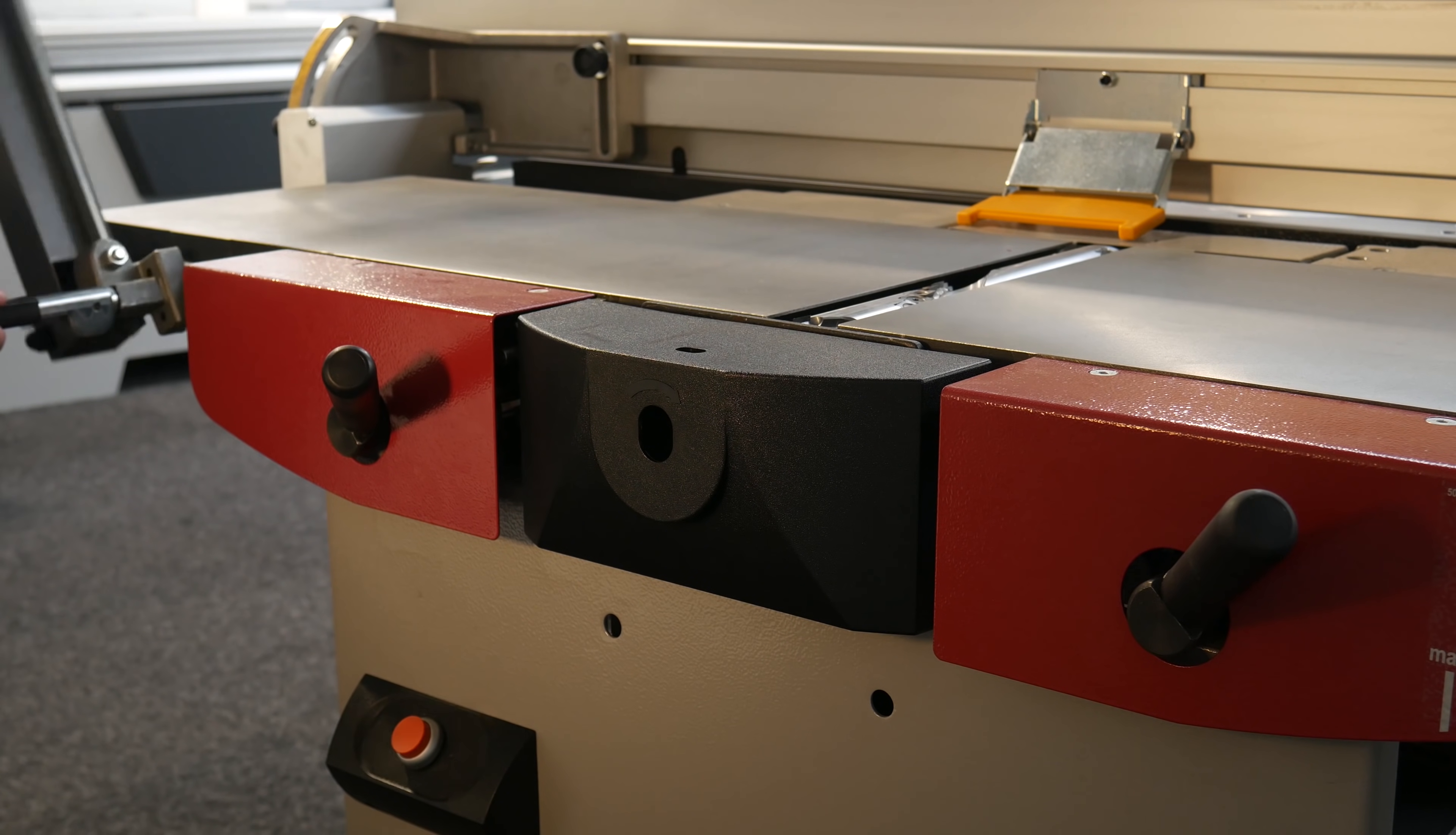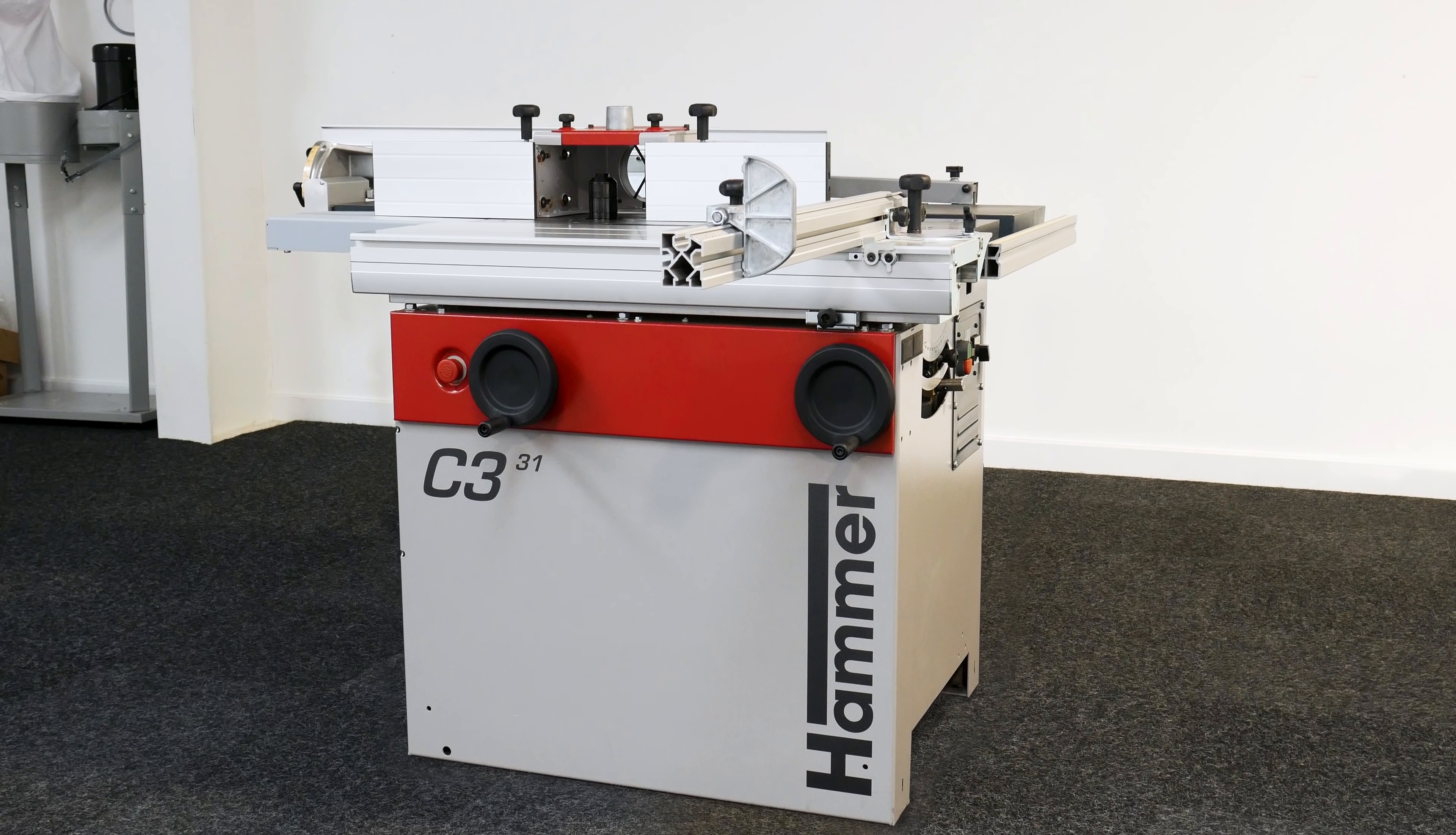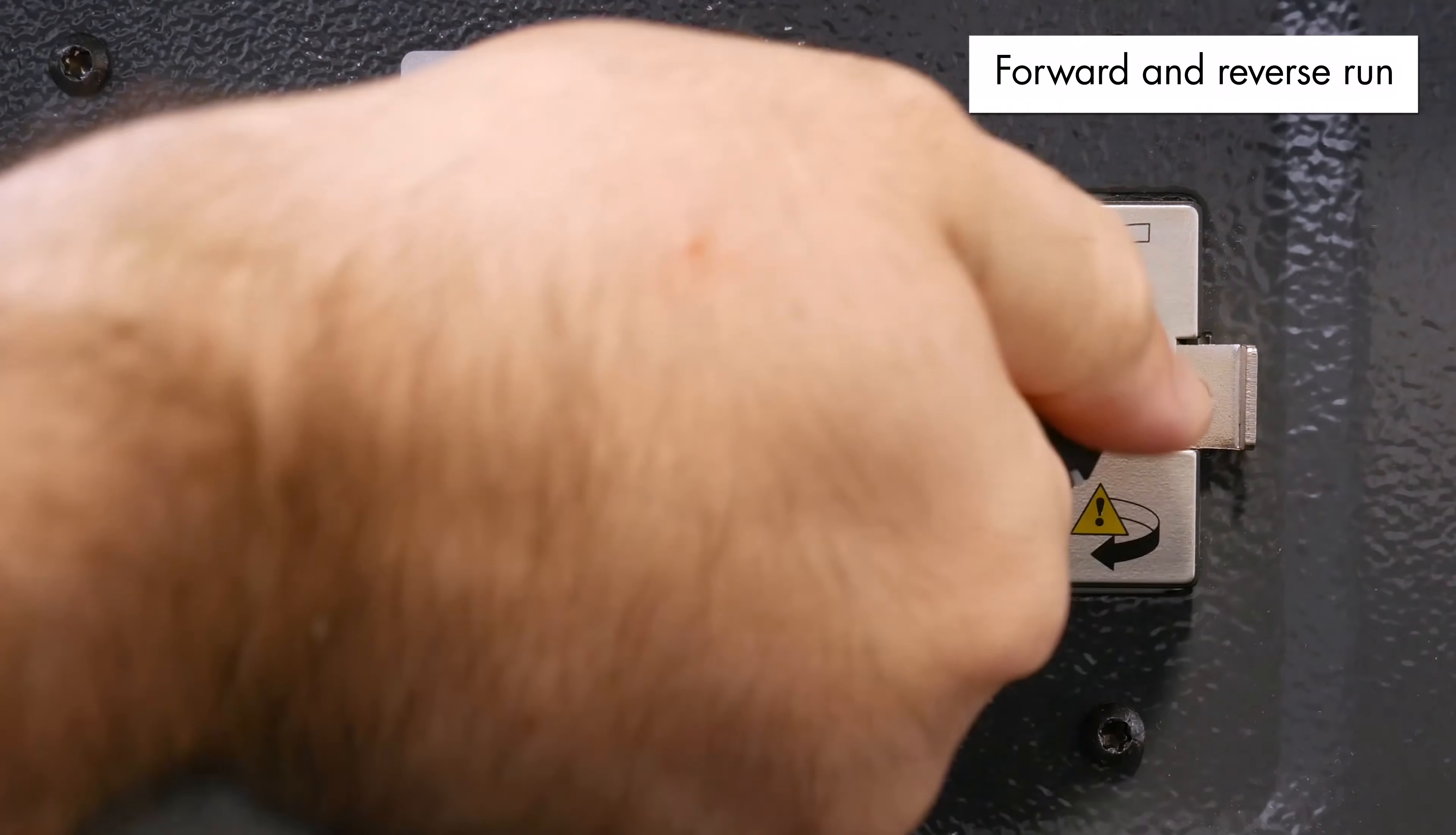The Hammer C331 also has the option of a horizontal mortising unit, which is mounted on the planer side and allows the user to produce tenon joints for a variety of purposes. As with all Hammer machines, the C331 can be fitted with a rolling carriage for enhanced manoeuvrability, and is available with both single-phase and three-phase power options, with the latter fitted as standard. The motor produces a four-horsepower output and allows forward and reverse run.